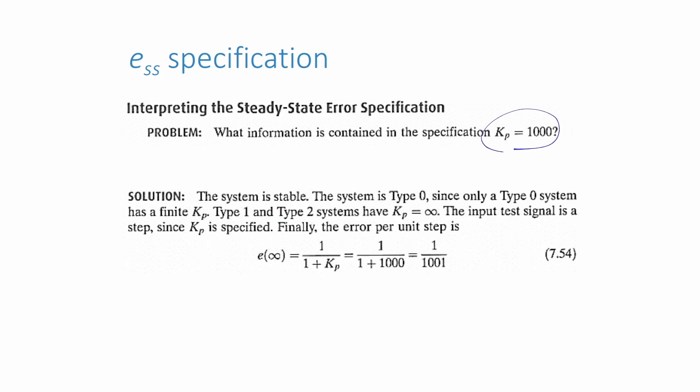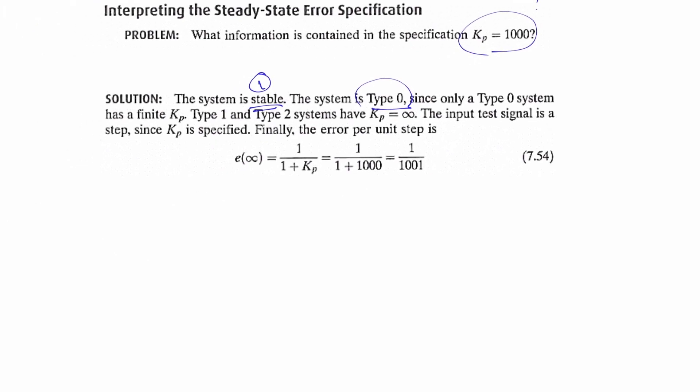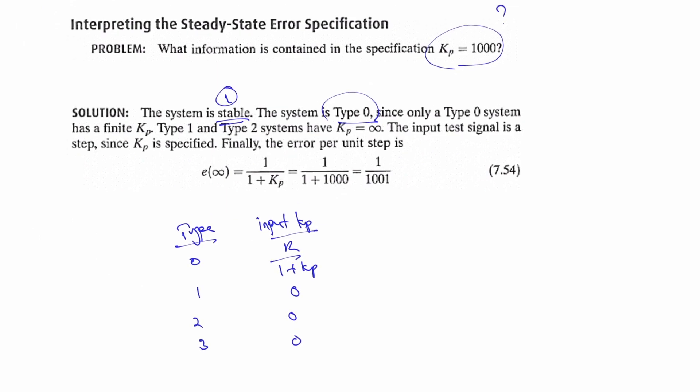Similarly, for position constant Kp, if the value of Kp is 1000, we can say that the system is stable and the system is type 0. Refer to the table for type of system and the steady state error. We also know that the test signal is a step. And finally, the error per unit is given by equation 1 over 1 plus Kp.